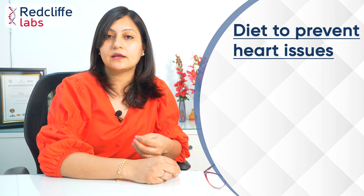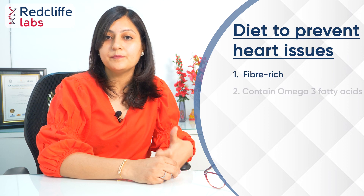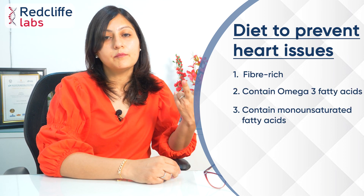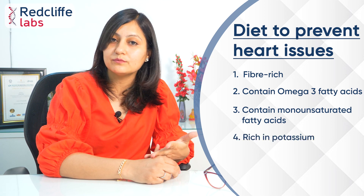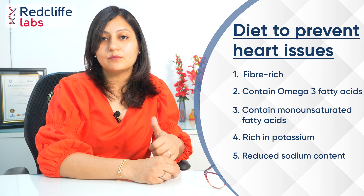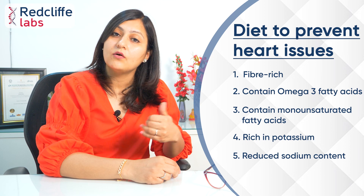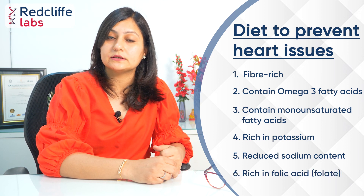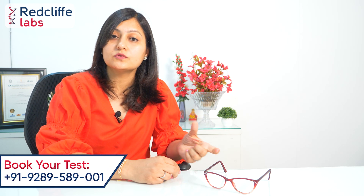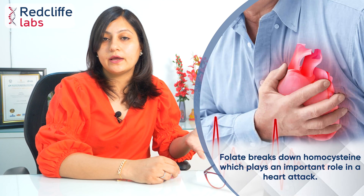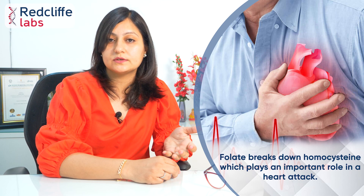The diet for heart ailments, to prevent heart attack, should be rich in fiber, omega-3 fatty acids, monounsaturated fatty acids, and potassium, while sodium should be low. One nutrient that research considers very important is folate, or folic acid, because folate helps in the breakdown of homocysteine levels.